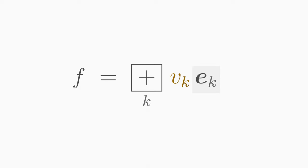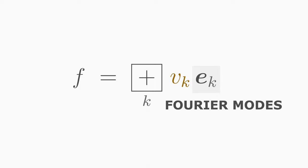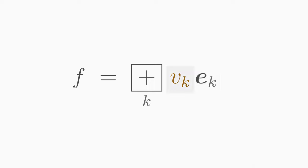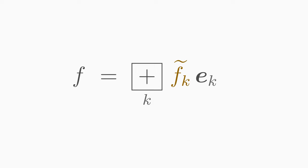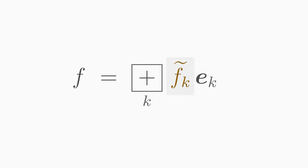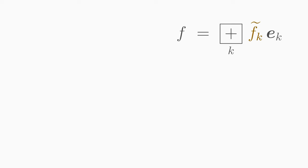In a linear combination for a function, the basis vectors are called basis functions. In optics, the basis functions are also called Fourier modes. The components v_k of a finite vector become Fourier coefficients f_k if we represent a function rather than a finite vector as a linear combination. If we represent a function as such a linear combination of basis functions, then we refer to this sum as a Fourier series of f. You can determine the Fourier coefficients in the same way as you determine the vector components in linear algebra.